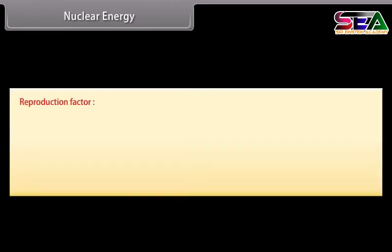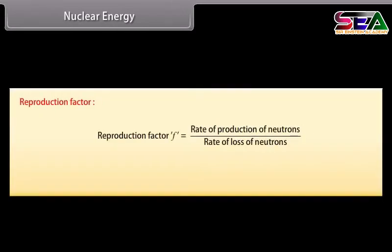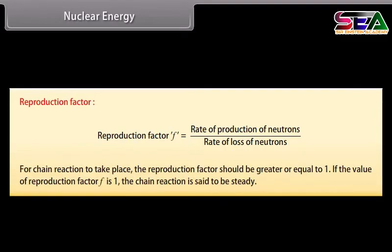Reproduction factor: It is defined as the ratio of rate of production of neutrons to the rate of loss of neutrons. For a chain reaction to take place, the reproduction factor should be greater than or equal to one. If the reproduction factor equals one, the chain reaction is said to be steady.